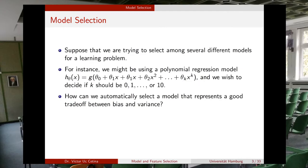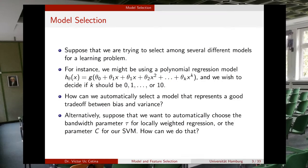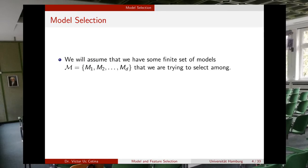Another example in which we would like to have an algorithm to select a model is, for example, suppose that you want to automatically choose the bandwidth parameter tau for the locally weighted regression, or maybe you want to estimate the best C parameter, which was the trade-off factor in the support vector machine. So we will assume that we have a finite set of d models and we want to run an algorithm that will allow us to select the best model for our problem out of these d possible models.